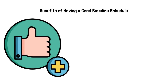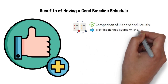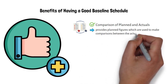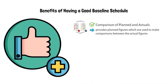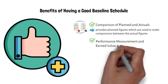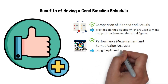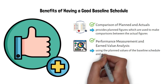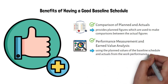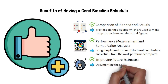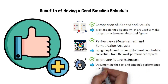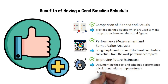Having a proper baseline provides many benefits to the project team. Three key benefits are: first, comparison of plan and actuals — the baseline schedule provides planned figures used to compare against actual figures; second, performance measurement and earned value analysis (EVA) — project teams can perform EVA using the planned values of the baseline schedule and actuals from work performance reports; and third, improving future estimates — documenting cost and schedule performance calculations helps improve future plans and estimates.